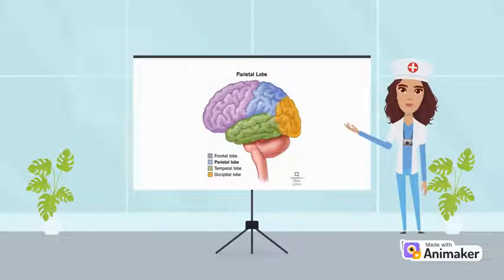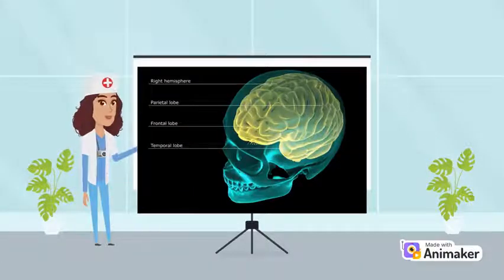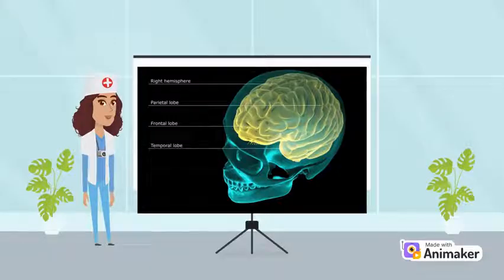The parietal lobe is one of the four major brain lobes of the cerebral cortex in humans. It sits near the upper back portion of the skull, close to the parietal bone.